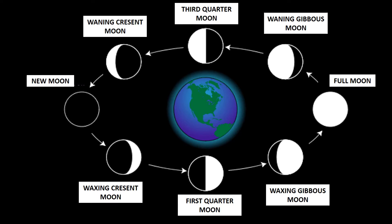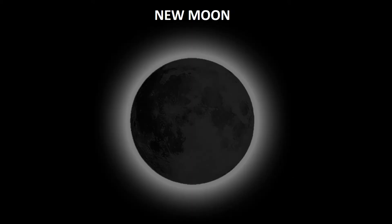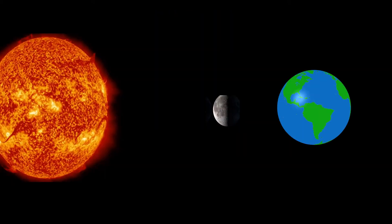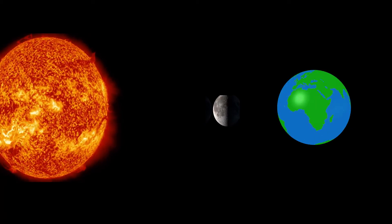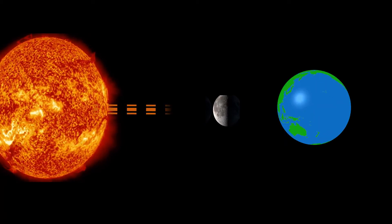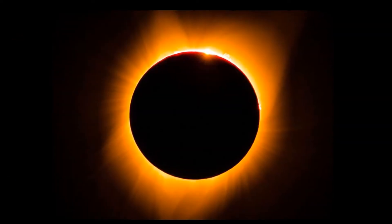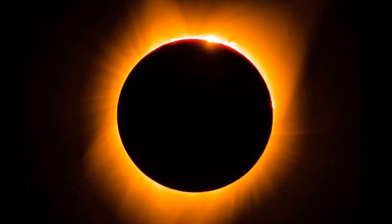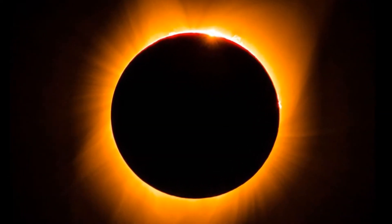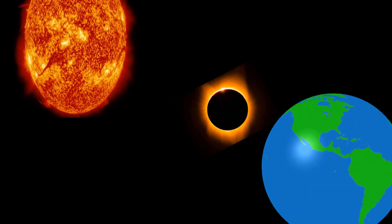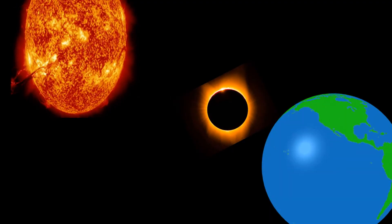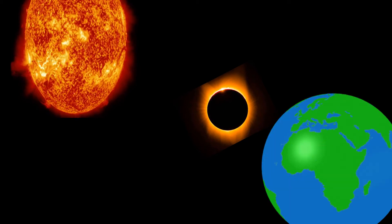Again the cycle repeats and starts with New Moon. New Moon: The Moon is between the Earth and the Sun. The part of the Moon that faces the Sun gets the sunlight. A New Moon cannot normally be seen from Earth, since only the dark side of the Moon faces Earth at this point.